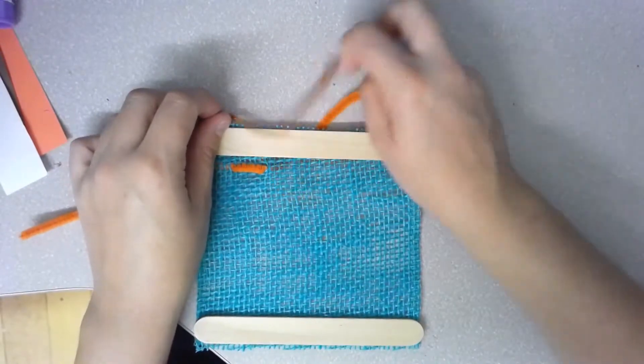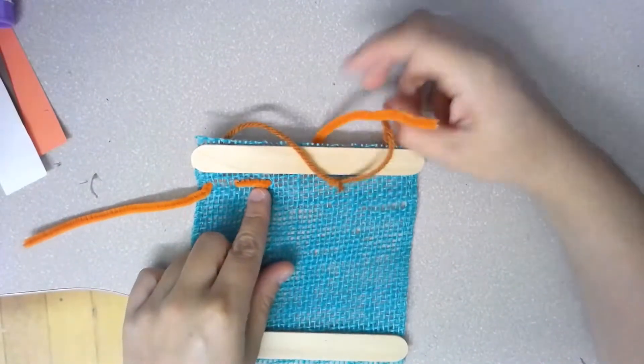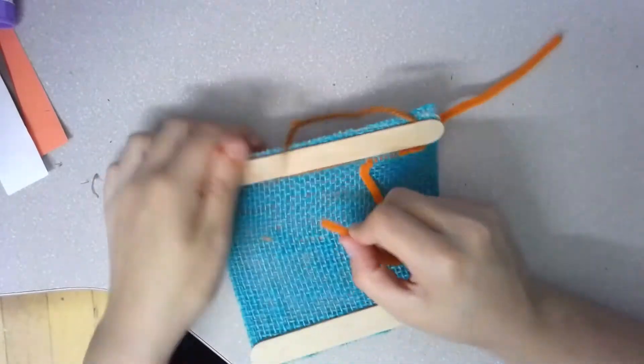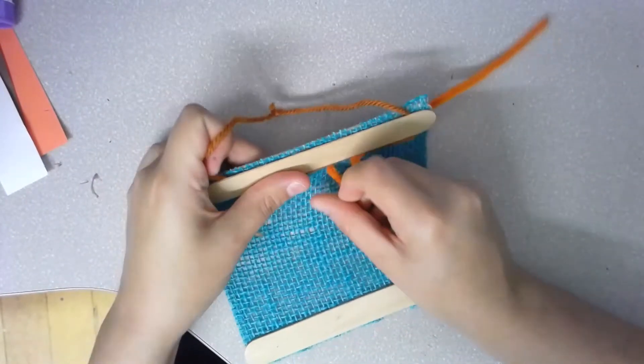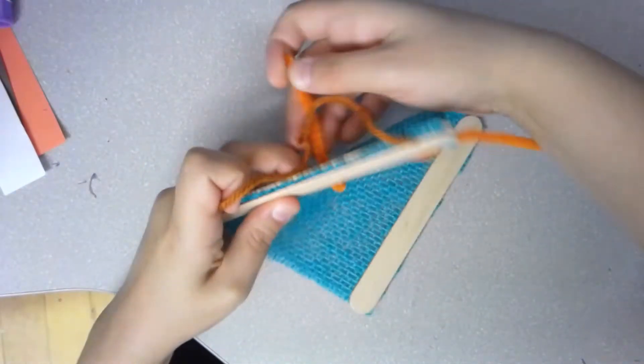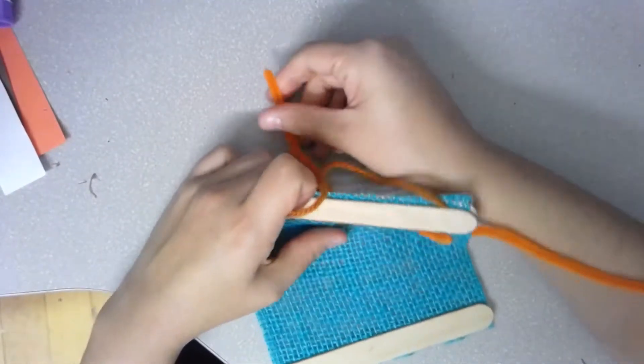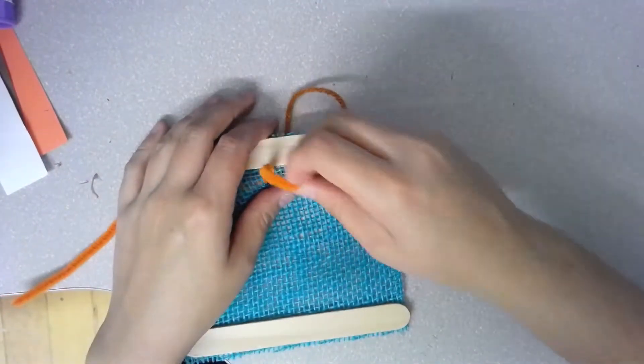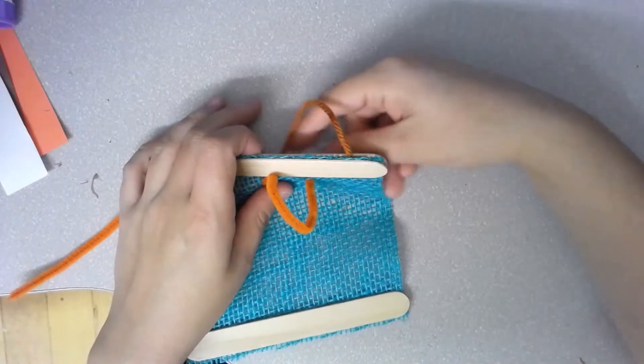Flip your loom over. Find the tip, poke it through a hole so that you see it come out the back end. Pull it, flip it, push it through, pull it out, flip it over.